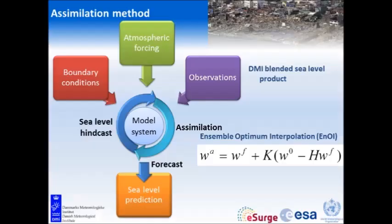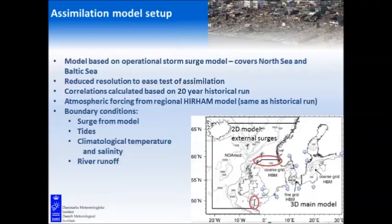Now we have a blended product that we can use as input to our assimilation, and we also have an assimilation scheme. For assimilation experiments we reduced the horizontal resolution to six nautical miles and did not use two-way nesting, but otherwise it's the same model code. We did a 20-year historical run and calculated correlations based on that, which were used as input to the assimilation.